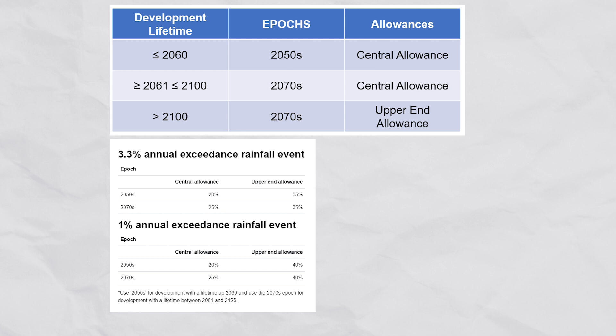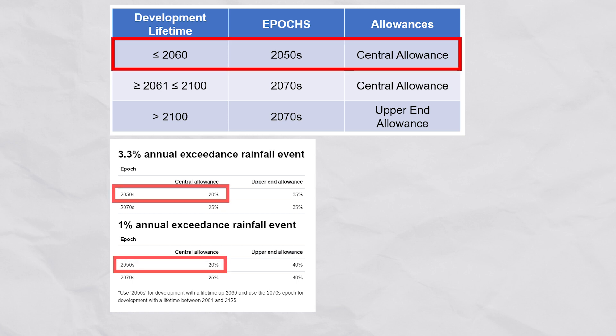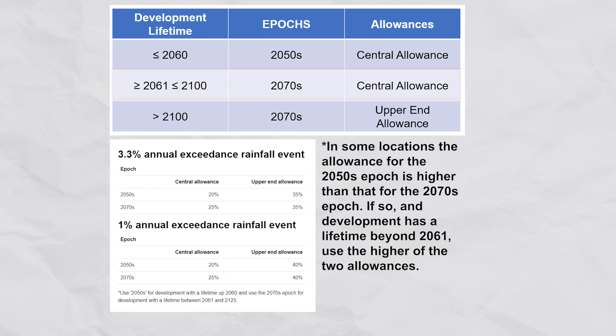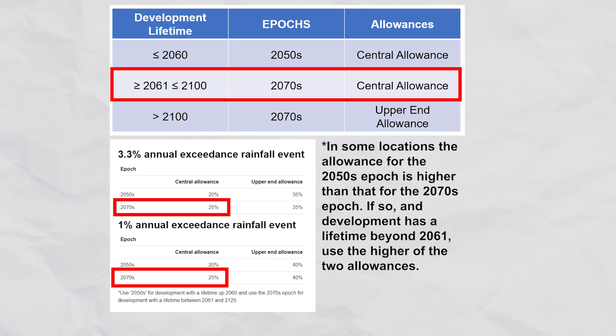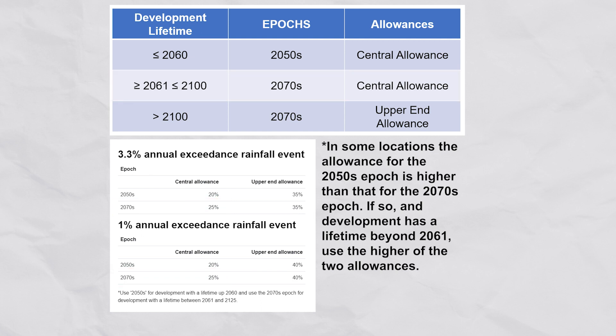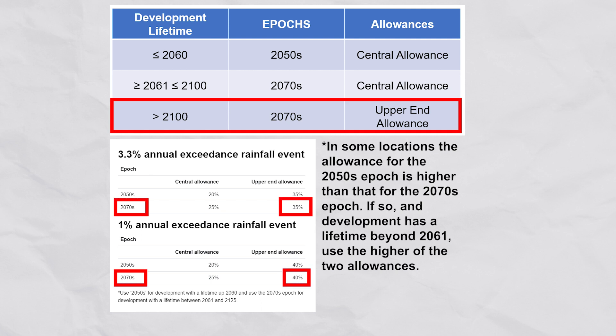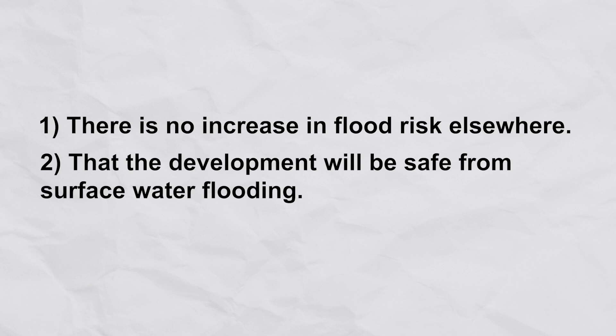For developments with a lifetime up to 2060 we should use the central allowances for the 2050s epoch. For developments between 2061 and 2100 we should use the central allowance for the 2070s epoch, and for developments with a lifetime over 2100 we should use the upper end allowances for the 2070s epoch. When designing for the 1% annual exceedance probability event — the 100-year return period — we should ensure there is no increase in flood risk elsewhere and that our development will be safe from surface water flooding.